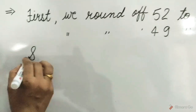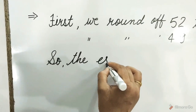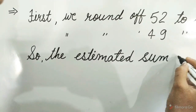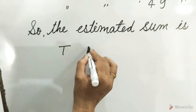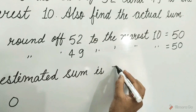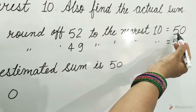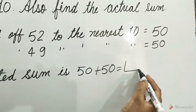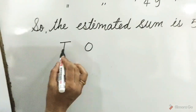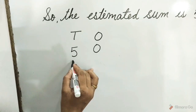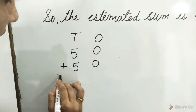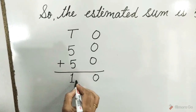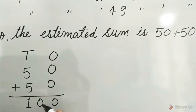So the estimated sum is — write T for tens and O for ones. 52 rounded to the nearest 10 is equal to 50, and 49 rounded to the nearest 10 is equal to 50. 50 plus 50 is equal to what? T for tens and O for ones: 5 tens 0 ones plus 5 tens 0 ones. 0 plus 0 is equal to 0 and 5 plus 5 is equal to 10. Children, the estimated sum is 100.